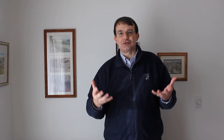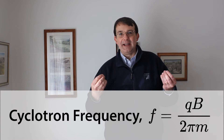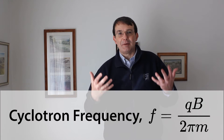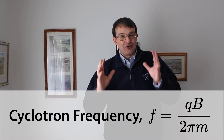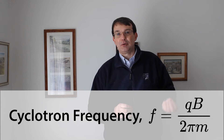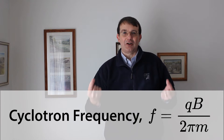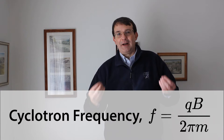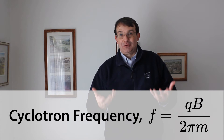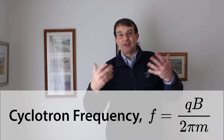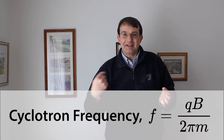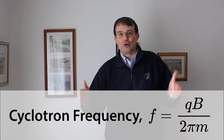This works because of cyclotron resonance. The radius of curvature of a charged particle in a constant magnetic field is proportional to its momentum, and for a classical non-relativistic particle, momentum is proportional to velocity. So the radius of curvature is proportional to velocity. The length of each half-track in the cyclotron is proportional to the radius, so the distance the particle travels is proportional to its velocity — meaning the particle always takes a fixed time to complete its orbit, no matter what the radius. That's how the cyclotron always ensures the particle is accelerated when it reaches the gap.